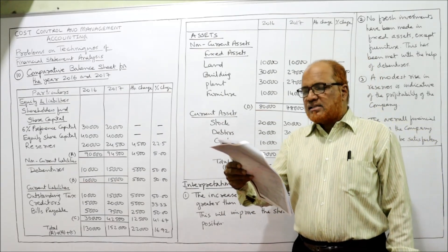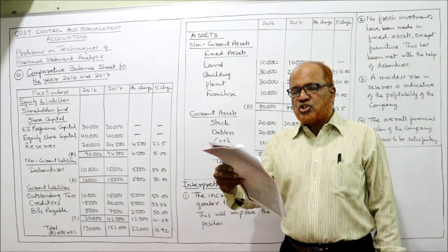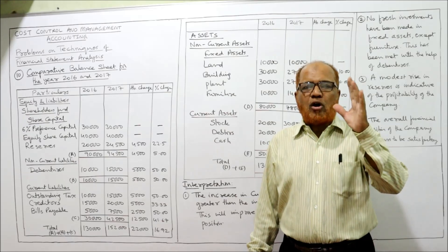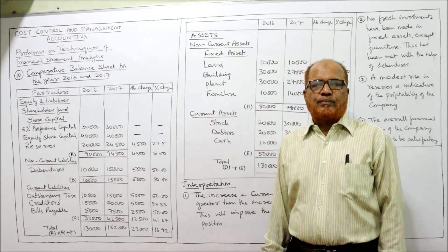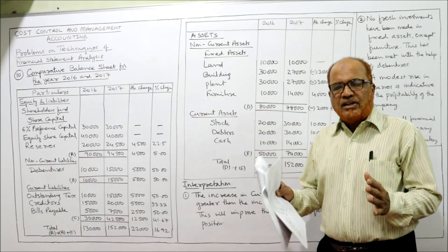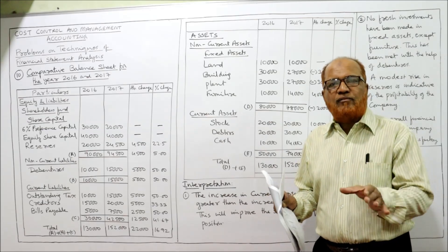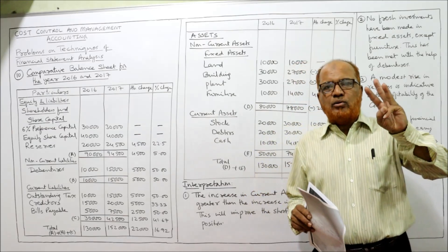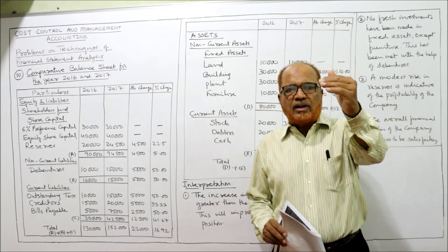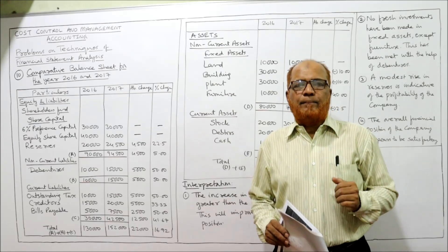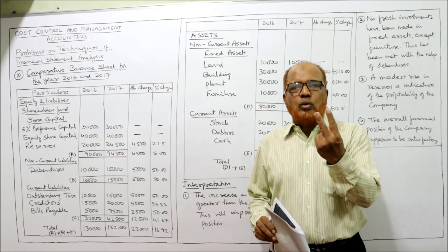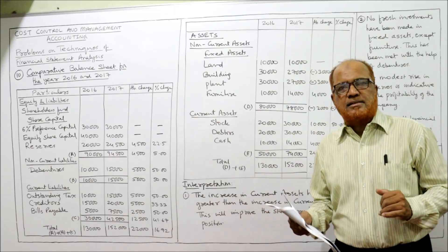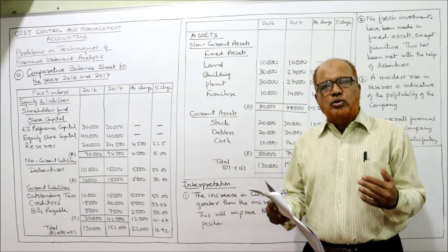The data given includes 6% preference shares, equity share capital, and reserves. First, you must remember the format of the balance sheet. The present vertical format divides liabilities into three categories: shareholders fund, non-current liability, and current liability. Assets are divided into two categories: non-current assets (fixed assets) and current assets.